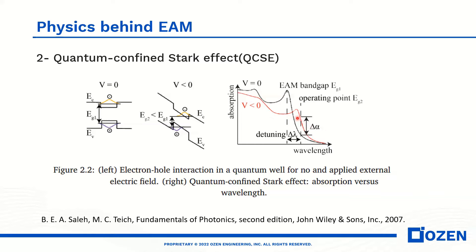For instance, if we work at a particular wavelength, we can see that when we have no voltage, we have an excitonic peak in this region. But when we insert the voltage, the excitonic peak disappears in this region. If we work at this wavelength, in the case with voltage, we have a larger absorption.